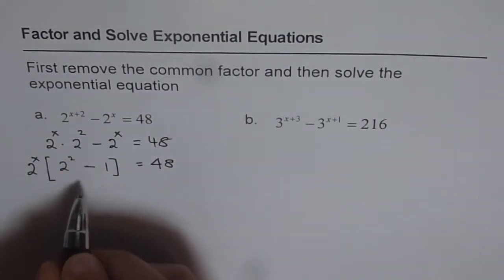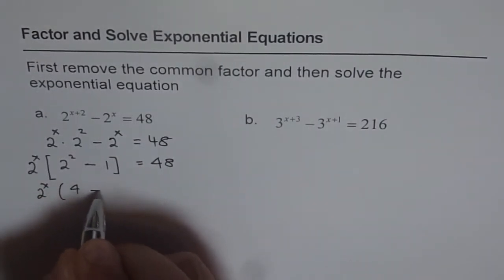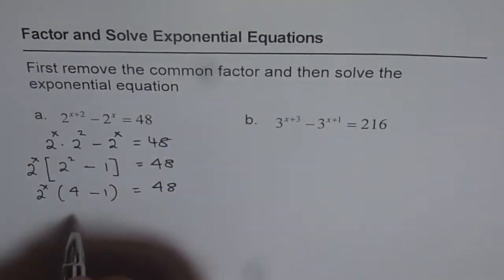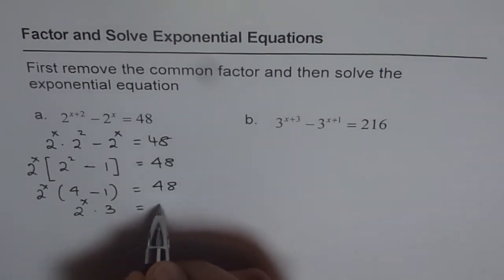We get 2 squared minus 1 equals to 48. Now 2 squared minus 1 is 4 minus 1, which is 3. So we will write 2 to the power of x times 3 equals to 48.